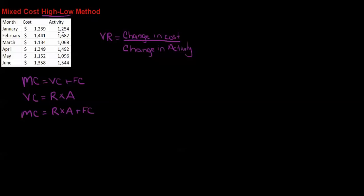When you're trying to identify the high point and the low point, you always want to use the activity — the activity measured is reliable. So which month has the highest activity? That would be February, so I'm going to put an H next to that. And which month has the lowest activity? That's March, so I'm going to put a low next to March. From this table, once you determine your high point and your low point, that's the only information we're going to use — just February and March.